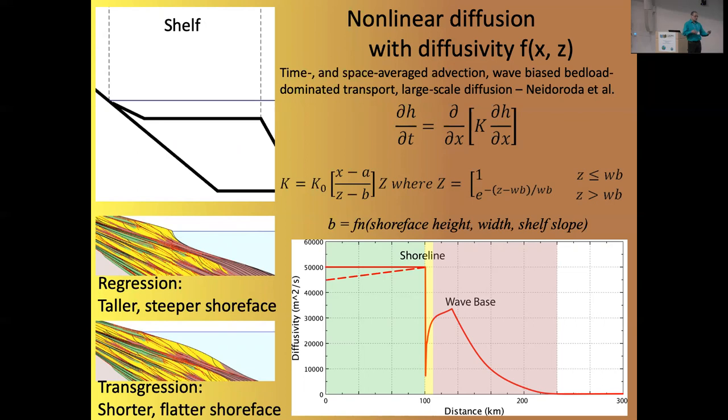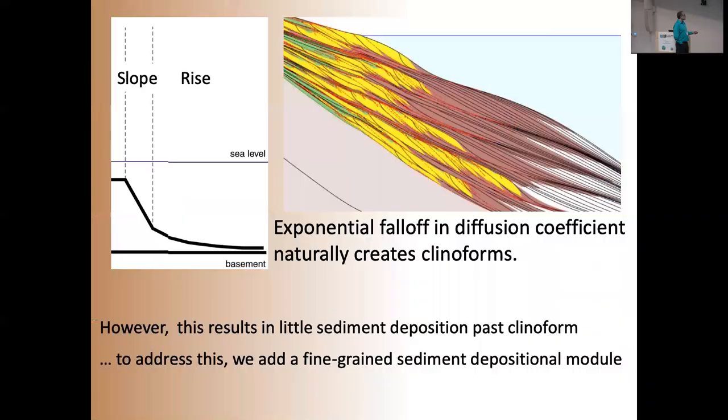So what you find is that when the system is prograding, the shore faces tend to be taller and steeper. When they're transgressing, they tend to be shorter and flatter. And so when you transgress, you often just erode off the top of the shore face. And the lower shore face tends to be preserved and the upper shore face eroded, which fits with what you see in a lot of outcrops. So I've been, I don't know if there's better schemes out there, but this certainly produces things that seem realistic to me.